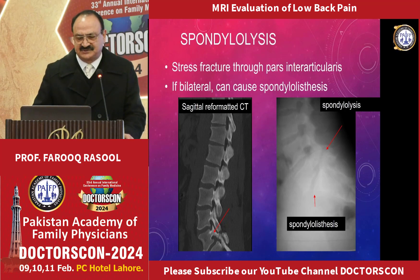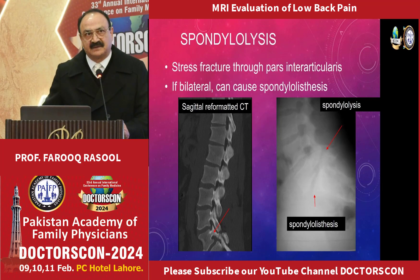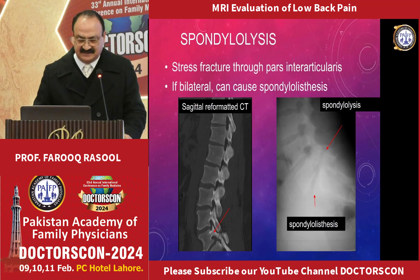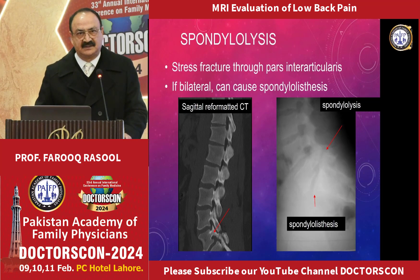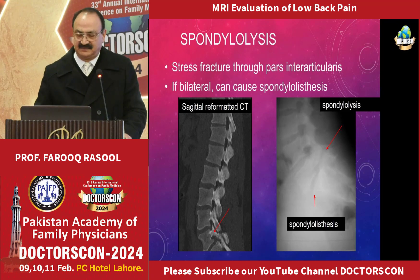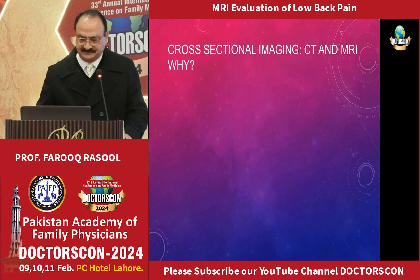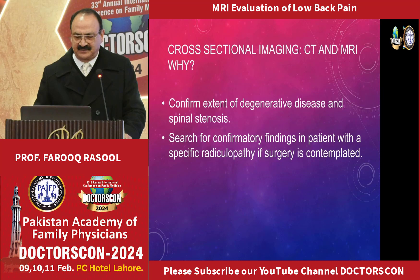Spondylolisthesis is a stress fracture of the pars interarticularis. It is best evaluated by MRI with T2-weighted fat-suppressed imaging, and when a fracture is present, CT can also pick it up. If there is a bilateral pars fracture, it will lead to spondylolisthesis, which may be grade 1. This image is showing grade 1 spondylolisthesis at L5-S1. Cross-sectional imaging — CT and MRI — confirm the extent of degenerative disease and spinal stenosis.